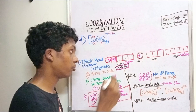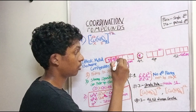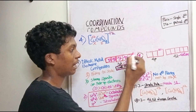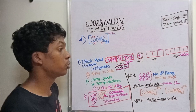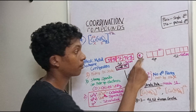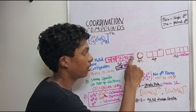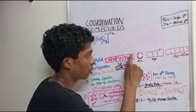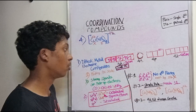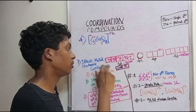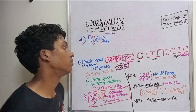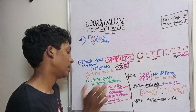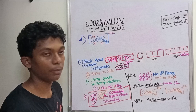Copper's electronic configuration is an exception: it is 3d¹⁰ 4s¹. Now if copper is Cu²⁺, we remove 2 electrons — one from 4s and one from 3d — leaving a single unpaired electron in the d-orbital, making it 3d⁹.